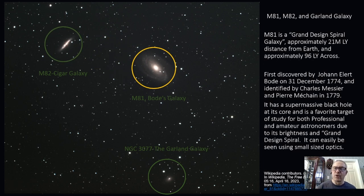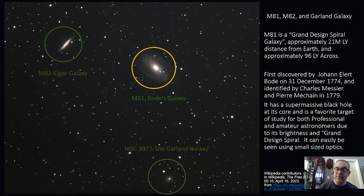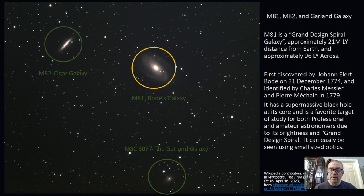M81 is a grand design spiral galaxy approximately 21 million light years from Earth and approximately 26,000 light years across. It was first discovered by Johann Elert Bode on December 31, 1774, and identified by Charles Messier and Pierre Méchain in 1779. It has a supermassive black hole at its core and is a favorite for both professional and amateur astronomers due to its brightness and grand spiral design, and it can be easily seen using small optics.